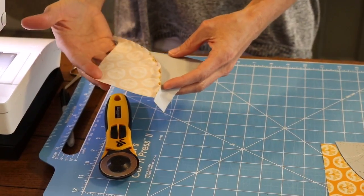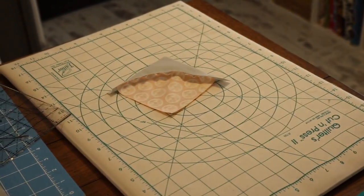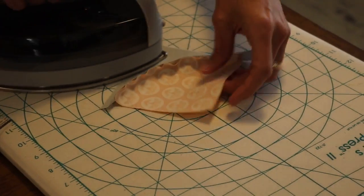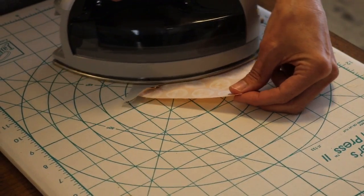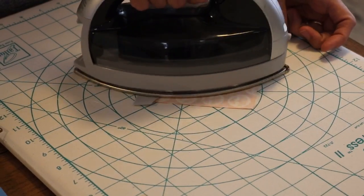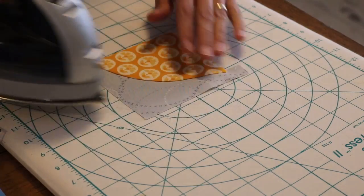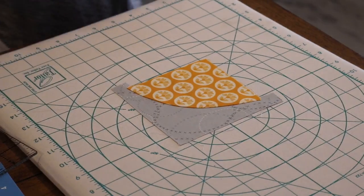So now we're going to iron this block. And I'm going to press from the back and I'm going to press towards my focus piece of fabric or my big chunky side. But really that seam will press any way you want it to.